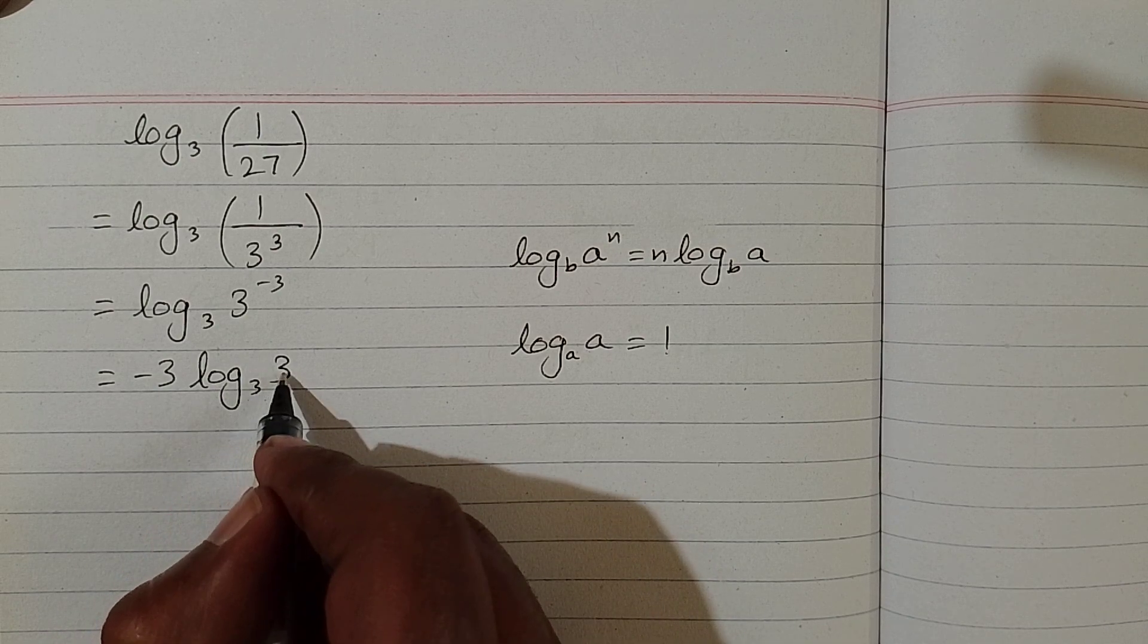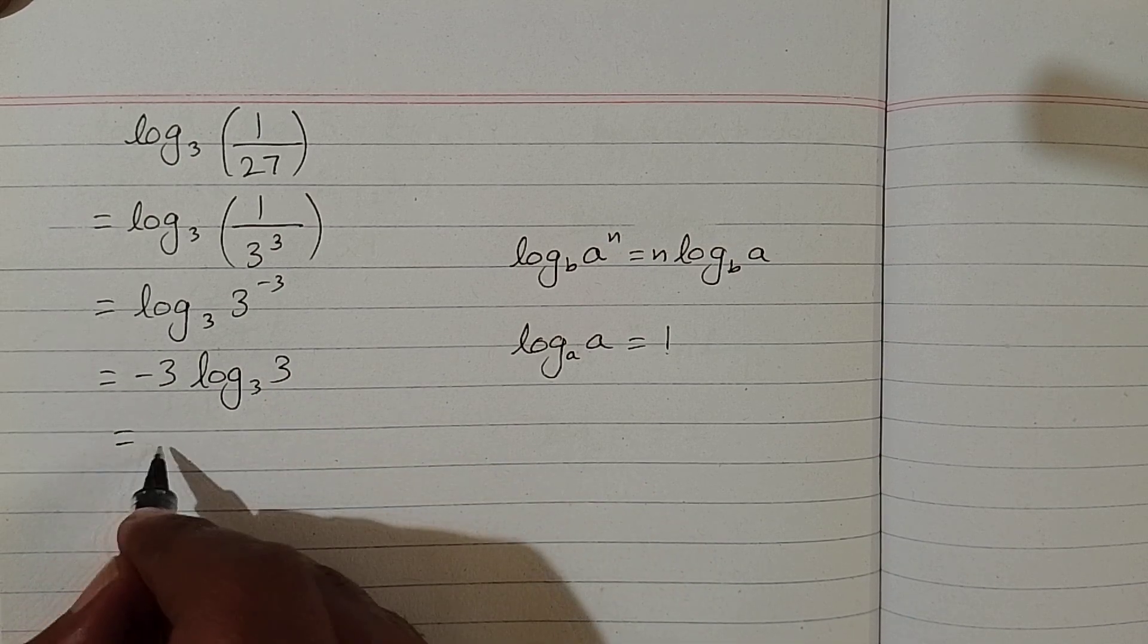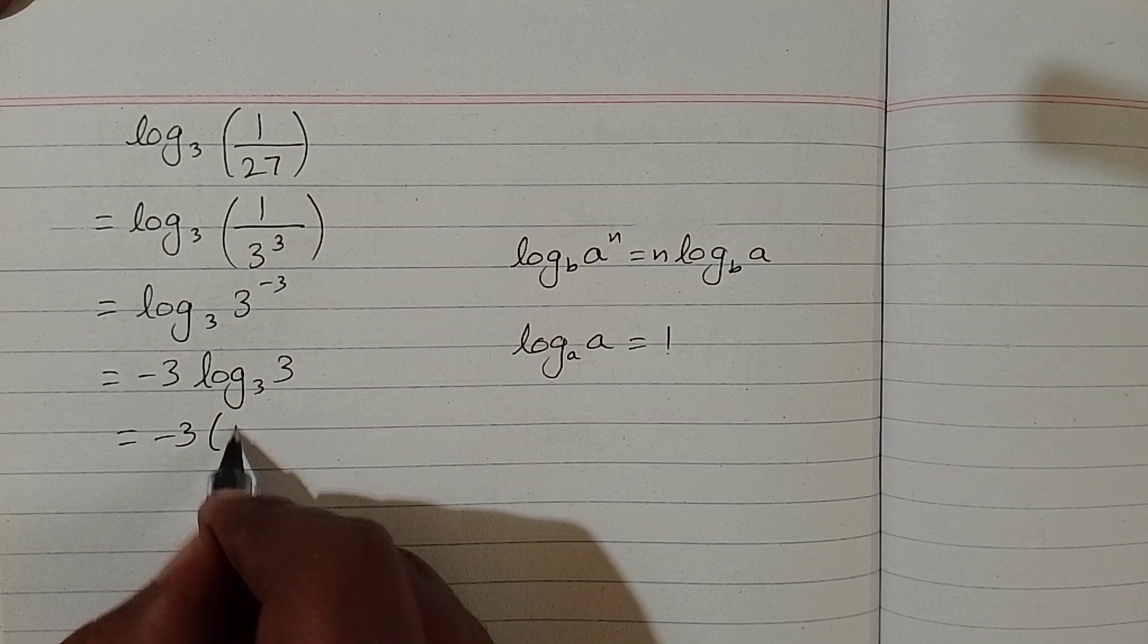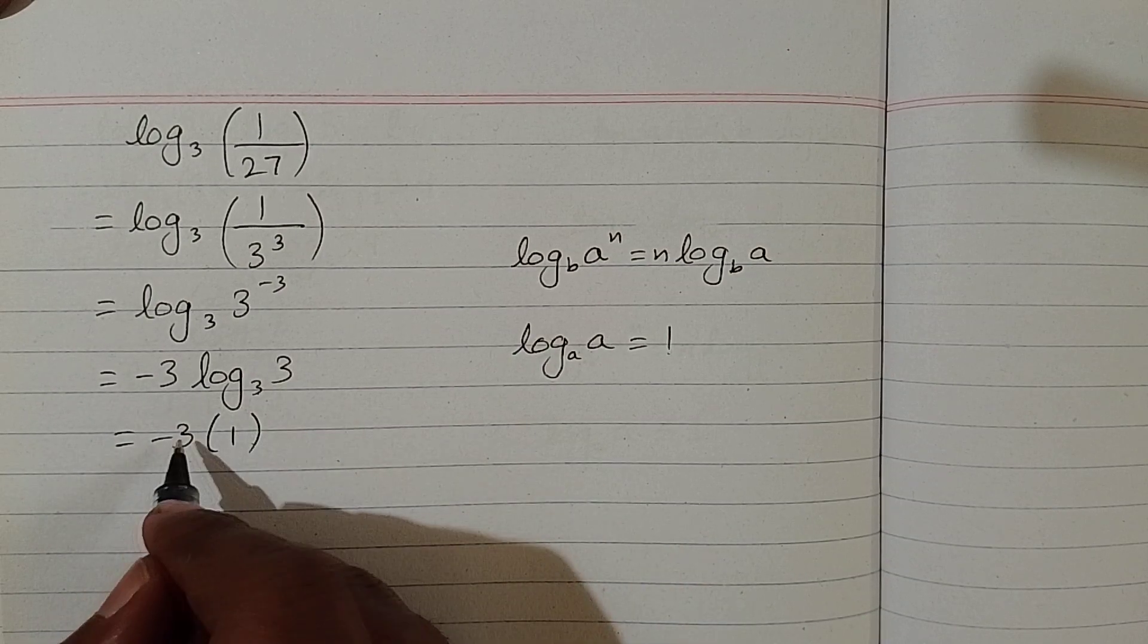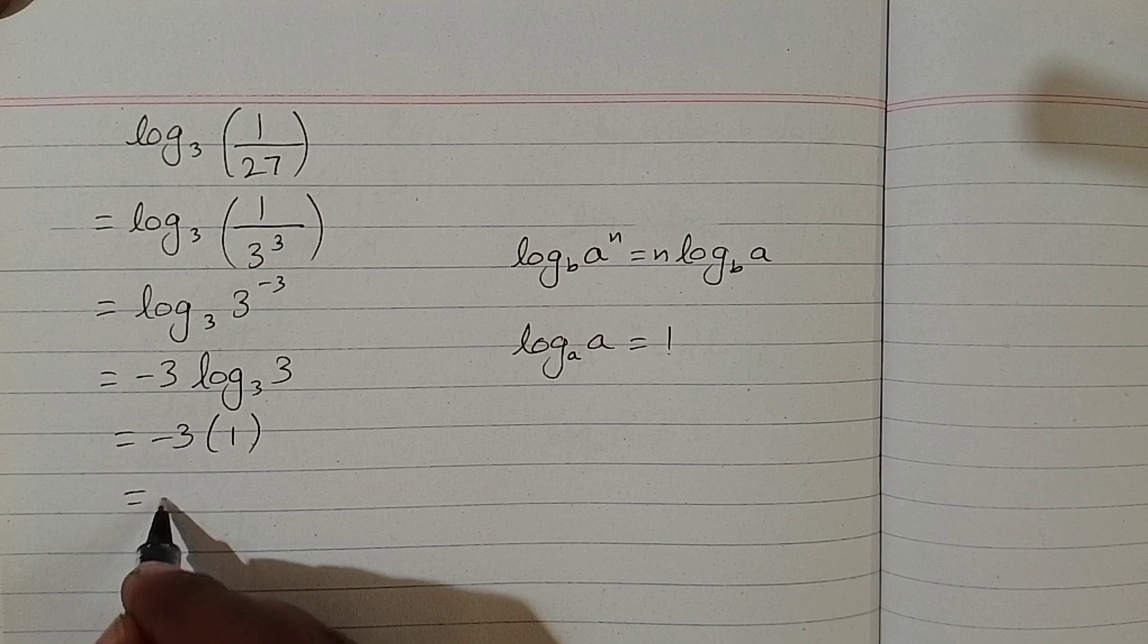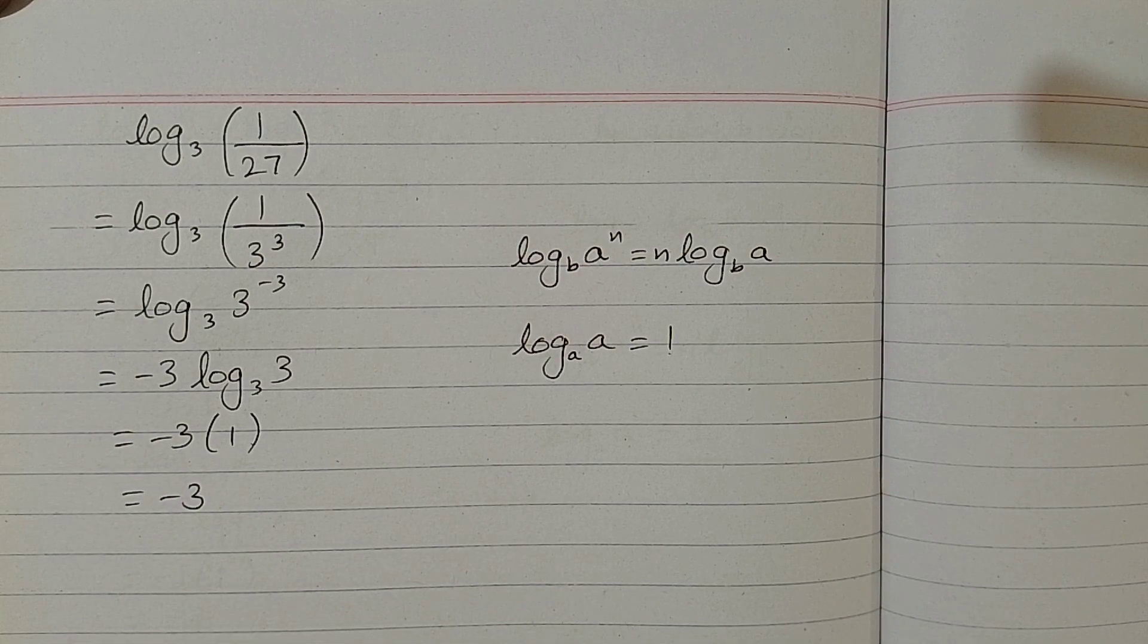So the value of log of 3 to the base 3 is equal to 1. We put 1 in place of this log, and minus 3 times 1 is minus 3, which is the required answer.